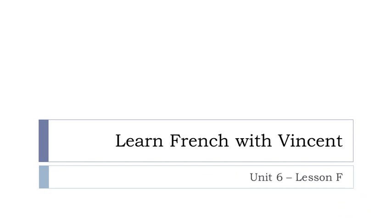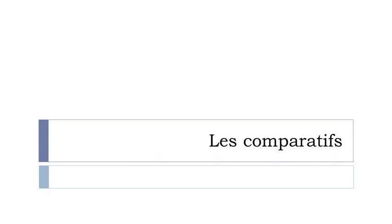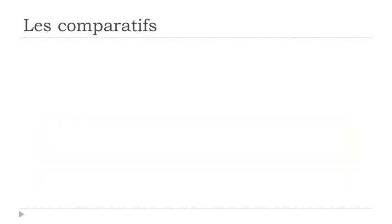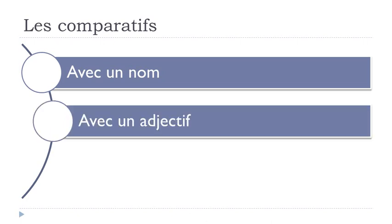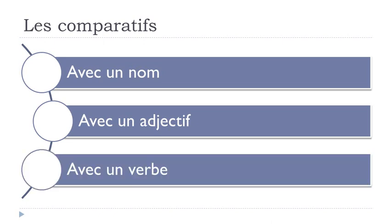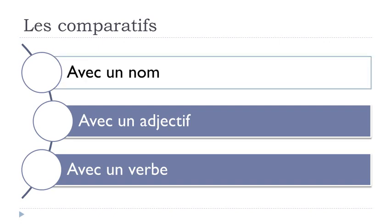Bonjour à tous and welcome to Learn French with Vincent. This is Unité 6, Leçon F. In this lesson we'll discover les comparatifs. If you want to compare in French, we'll discover three types of structures: avec un nom — with a noun; avec un adjectif — with an adjective; and avec un verbe — with a verb. Let's start with avec un nom.